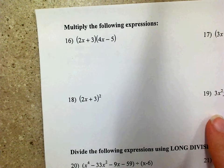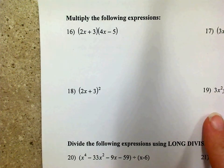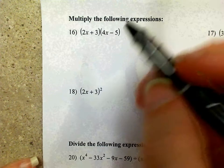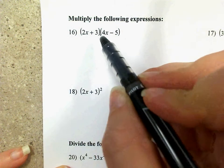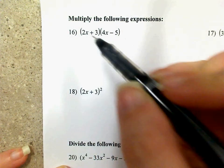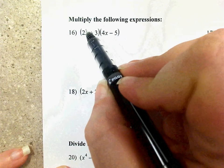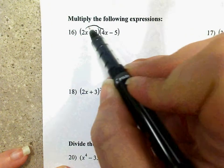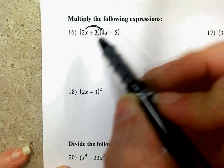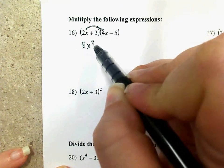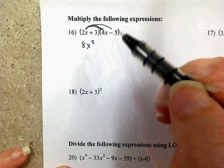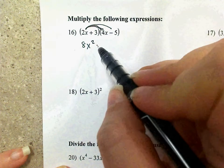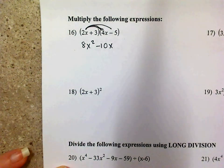On number 16, it says multiply the following expressions. I want to distribute the 2x and the 3 to both of these terms. So first I'll distribute the 2x. 2x times 4x is 8x squared, and 2x times negative 5 is negative 10x.